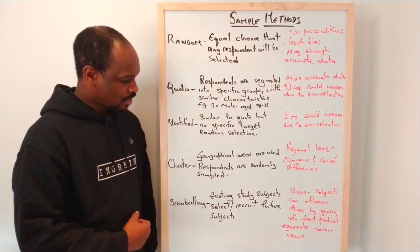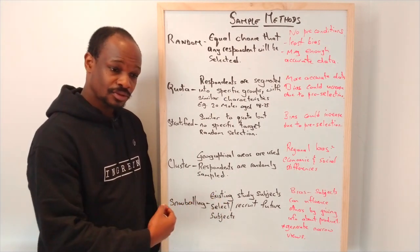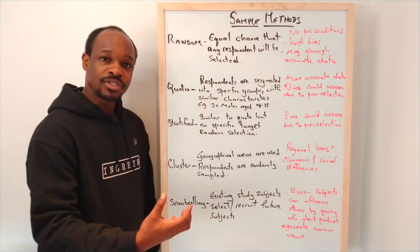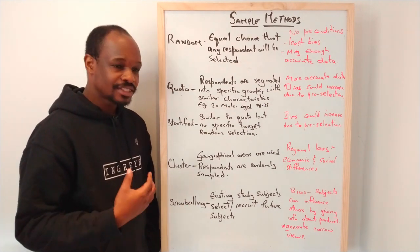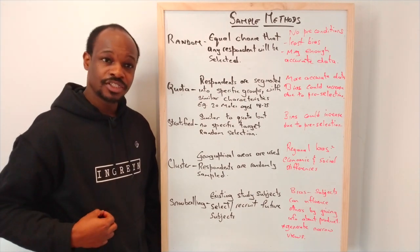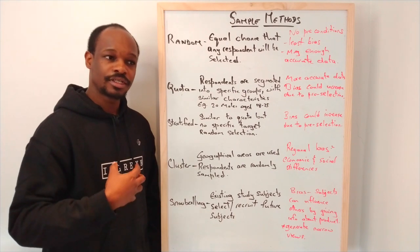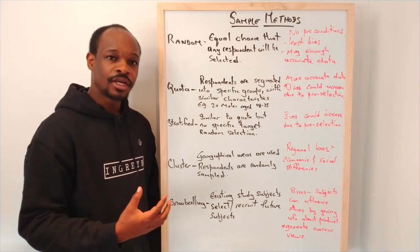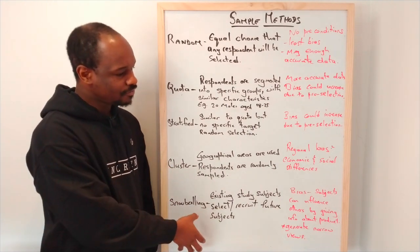For snowballing, this is where the existing study subjects, those who are part of this sampling, they now would make the selection or recruit others to continue the research. For example, let's say a company wants to promote like this shirt here, they would give it first to the employees who would sample it, wear it, and give feedback as to the quality of the shirt. Then those employees would now select others to be part of it.